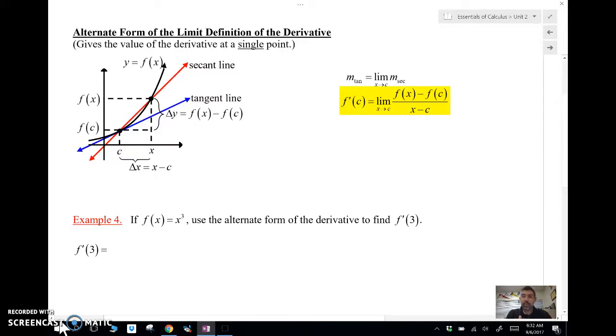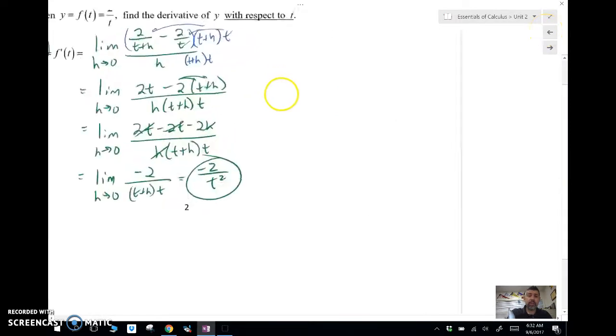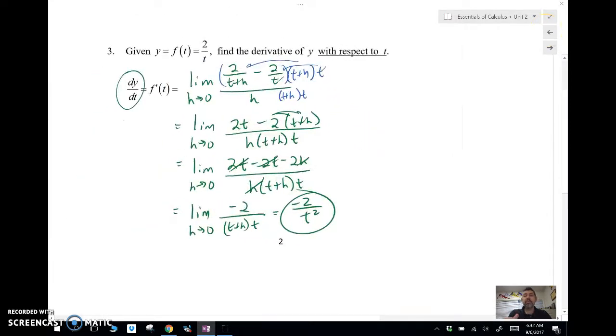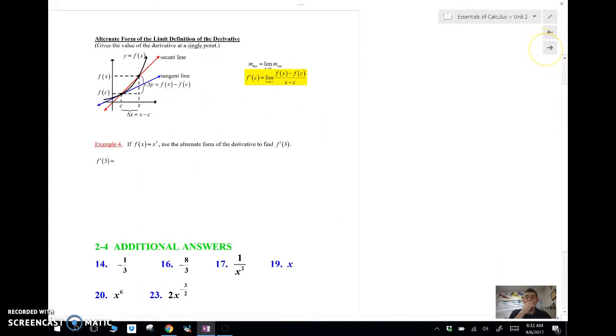What the alternate form is good for is when you want the value of the derivative at a single point. Notice the other ones we did in previous problems, we were looking at the derivative with respect to t or some variable, and we were finding a function at the end.